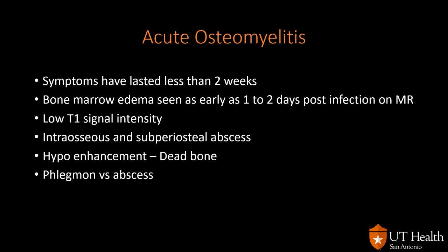Osteomyelitis is classified by progression: acute, subacute, and chronic, each with characteristic imaging findings. Acute osteomyelitis is defined as symptoms lasting less than two weeks. Bone marrow edema can be seen as early as one to two days post-infection on MRI with hematogenous spread — very sensitive but not specific. The diagnosis is always defined by low T1 signal intensity. Findings include intraosseous edema, bone marrow replacement, and subperiosteal abscess in children.